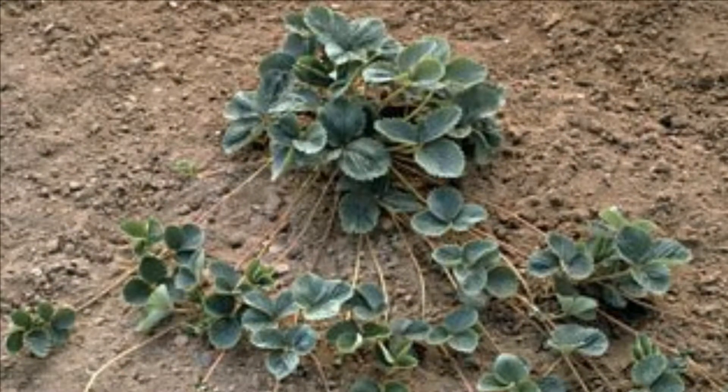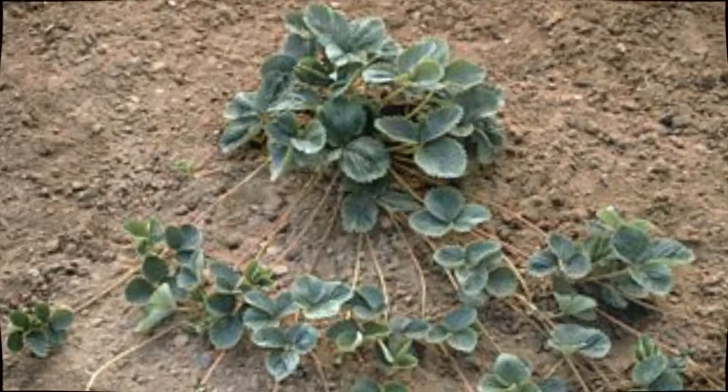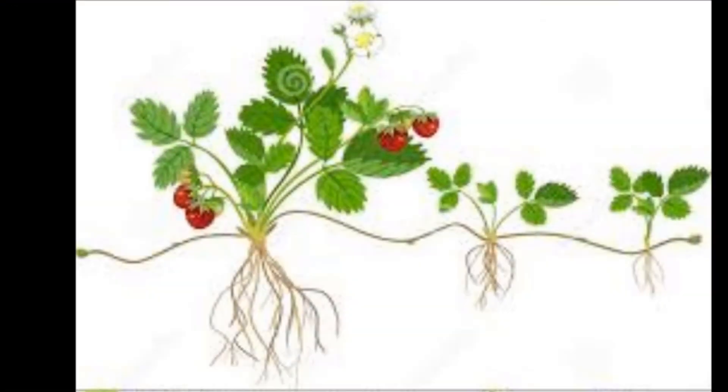Strawberries produce these runners where little strawberries grow, they grow their roots, and eventually they separate from the original parent plant, making genetically identical clones.